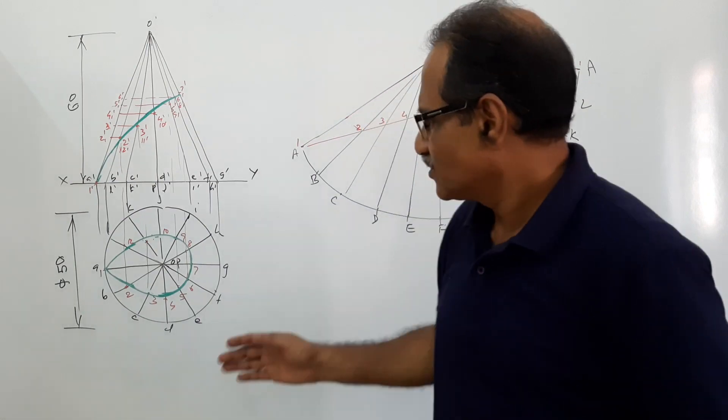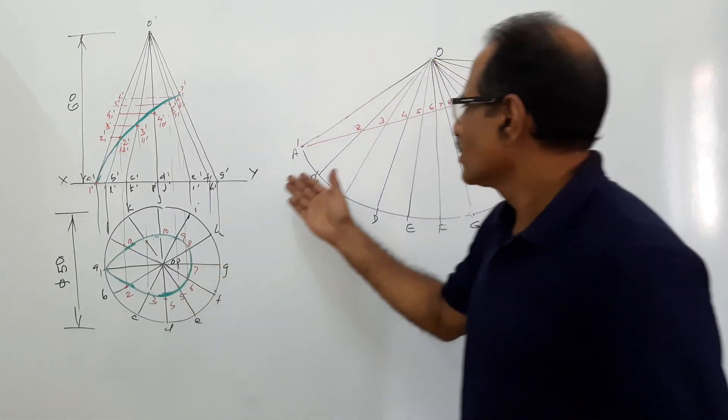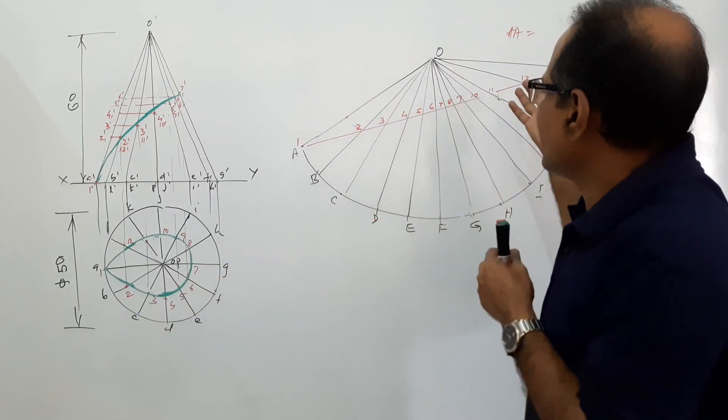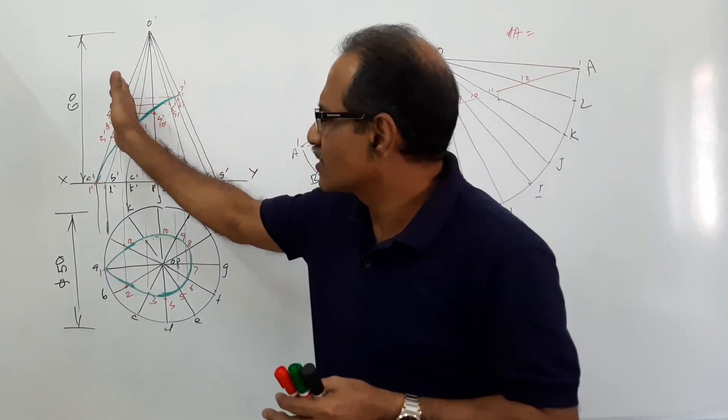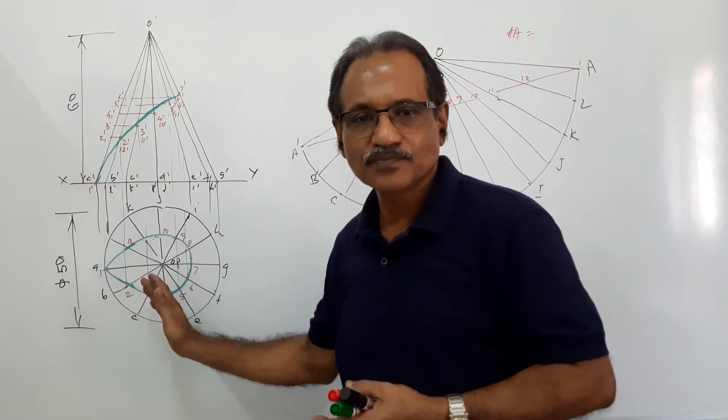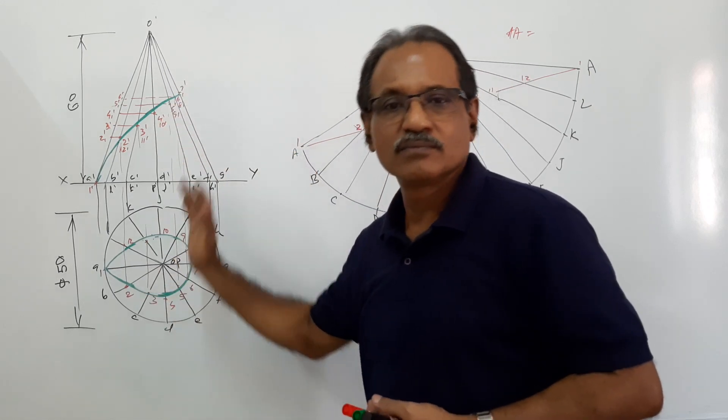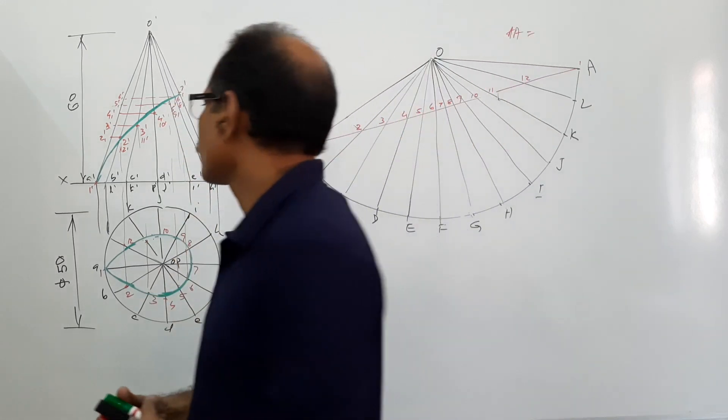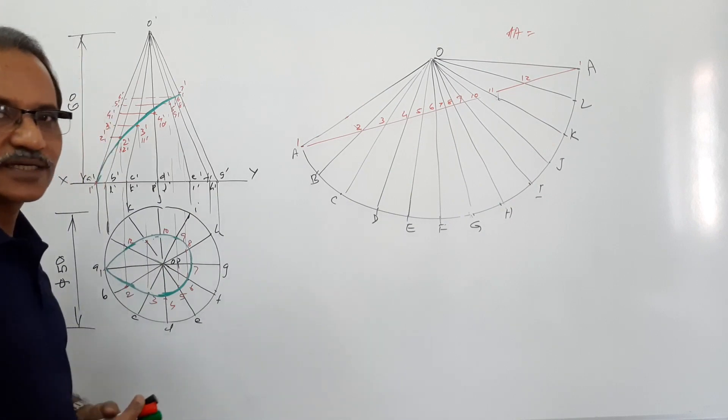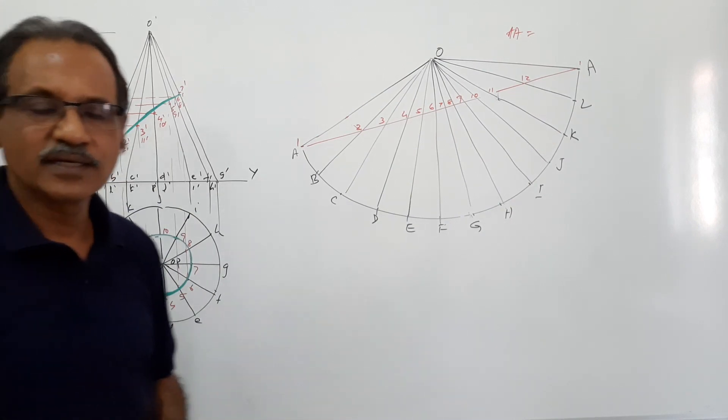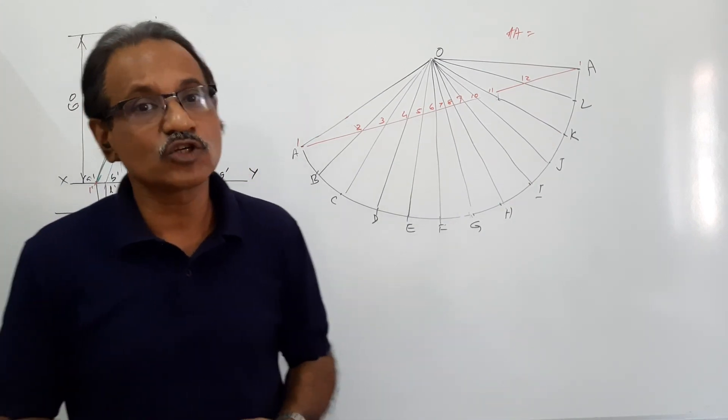Very interesting question, you can draw very easily. There is no complication. Name the points, come to the true length, come to the generator, and then come to the plan. I hope you understand. This sort of question can come for other objects also. We will do some problems on pyramids, some problems on cylinders also.